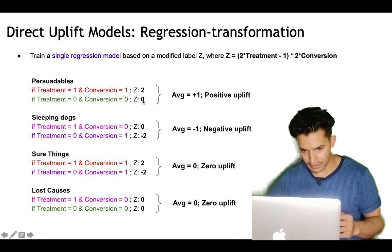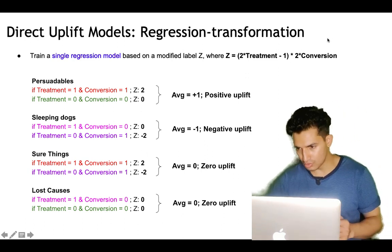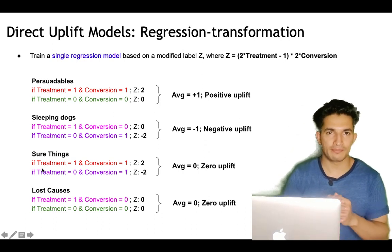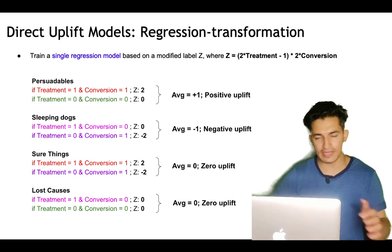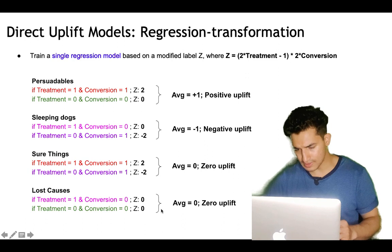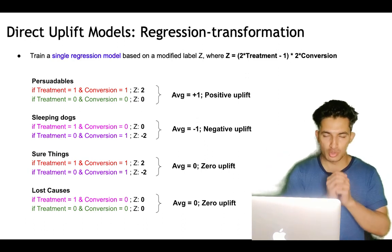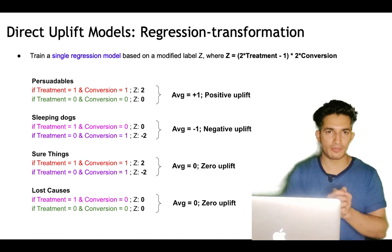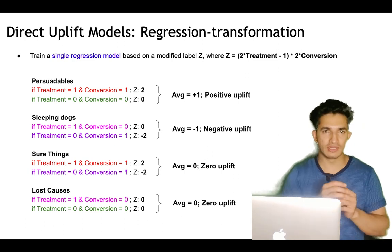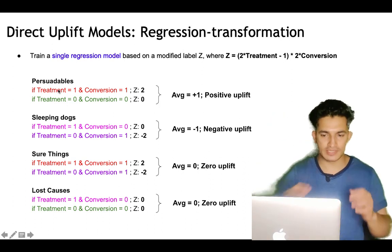For sleeping dogs: treatment=1, conversion=0 gives Z=0; treatment=0, conversion=1 gives Z=−2. For sure things who always buy: treatment=1 gives Z=2, treatment=0 gives Z=−2. For lost causes who never buy: Z=0 always. Due to the averaging effect, users with the same properties can be in treatment or control, so persuadable users appear with label 2 and label 0; sleeping dog users appear with 0 and −2; sure things with 2 and −2; lost causes with 0 and 0.